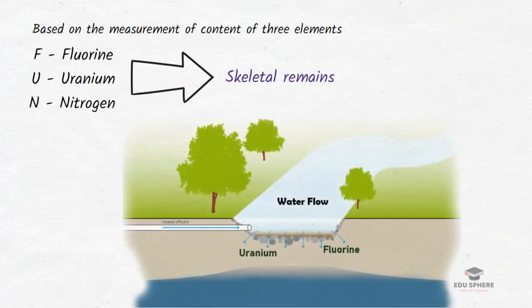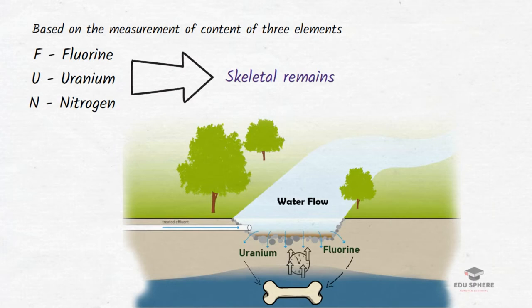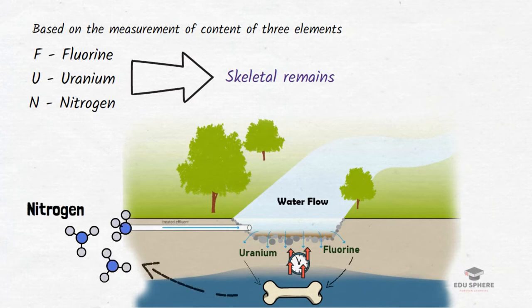Both fluorine and uranium are abundant in groundwater. The percolating groundwater deposits trace amounts of fluorine and other elements such as uranium into the bone, so the amount of fluorine and other trace elements in the bone matrix progressively increases. On the other hand, nitrogen exists in amino acids of the collagen structure of bones, and as time passes, the organic compounds of bone — mostly fats and proteins — are lost primarily through bacterial action.